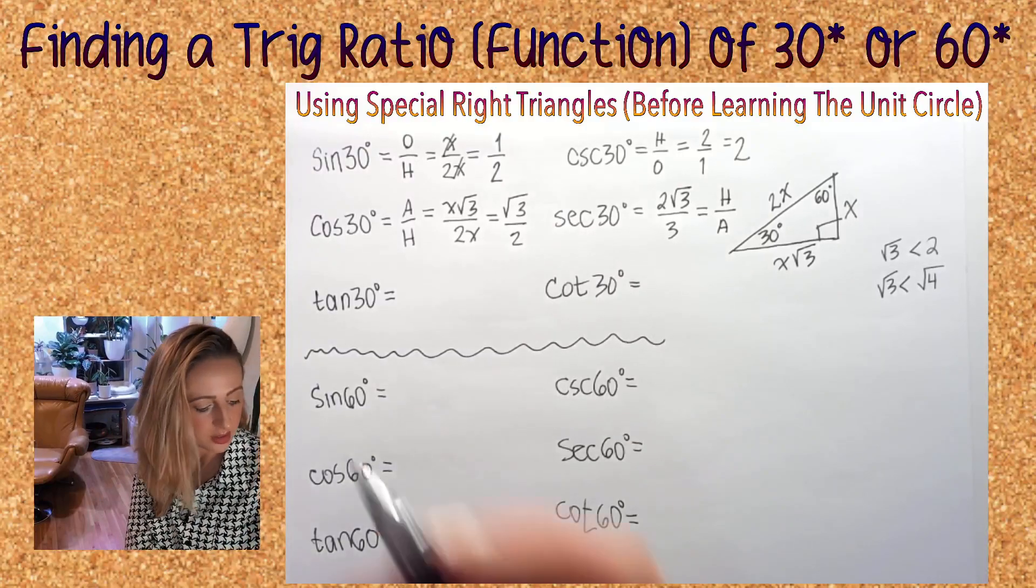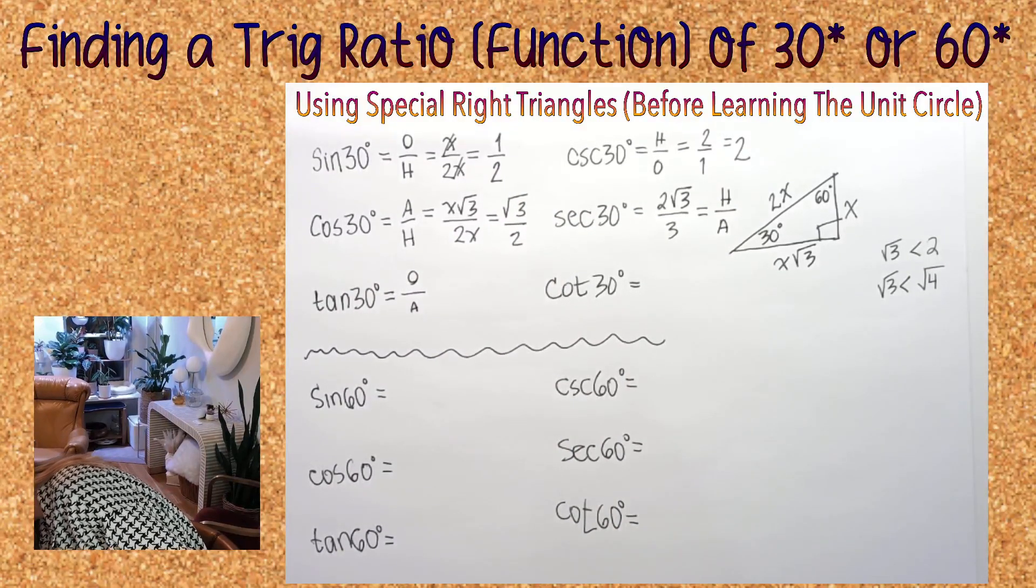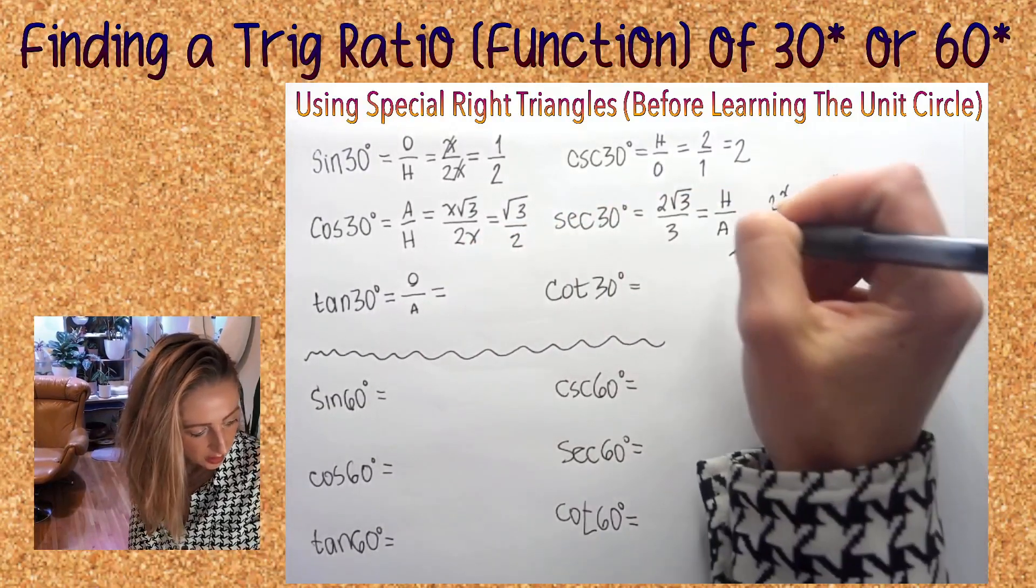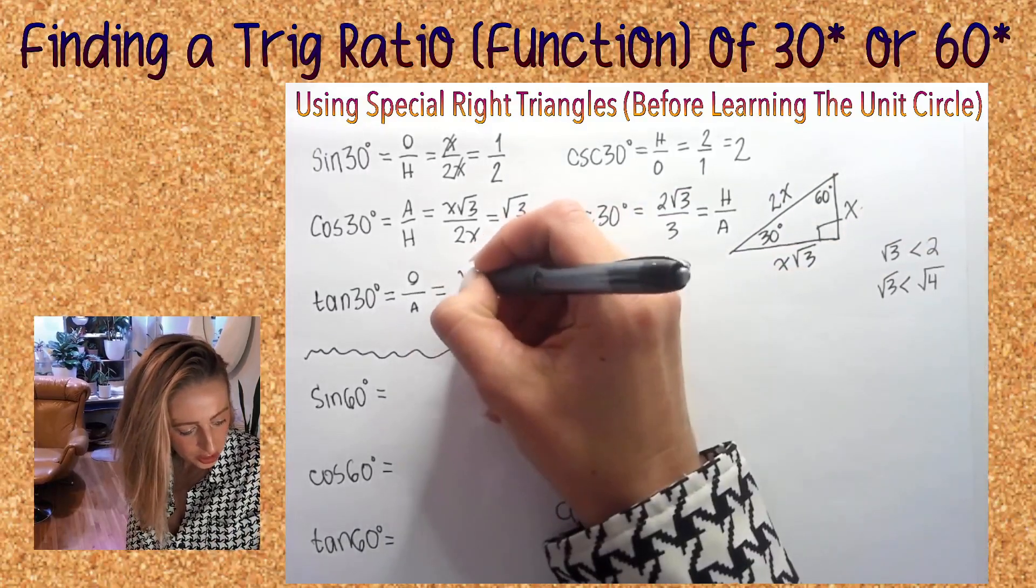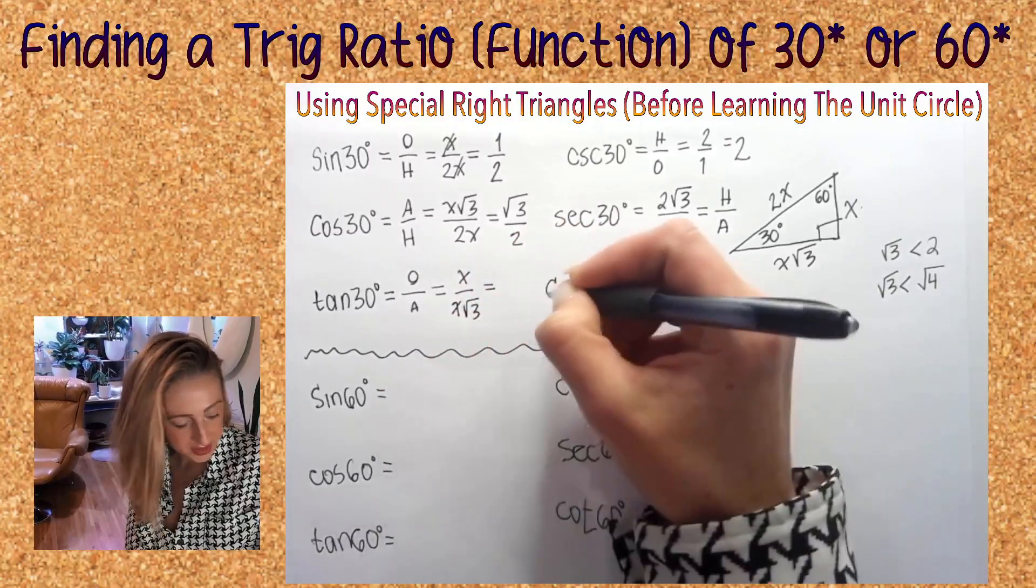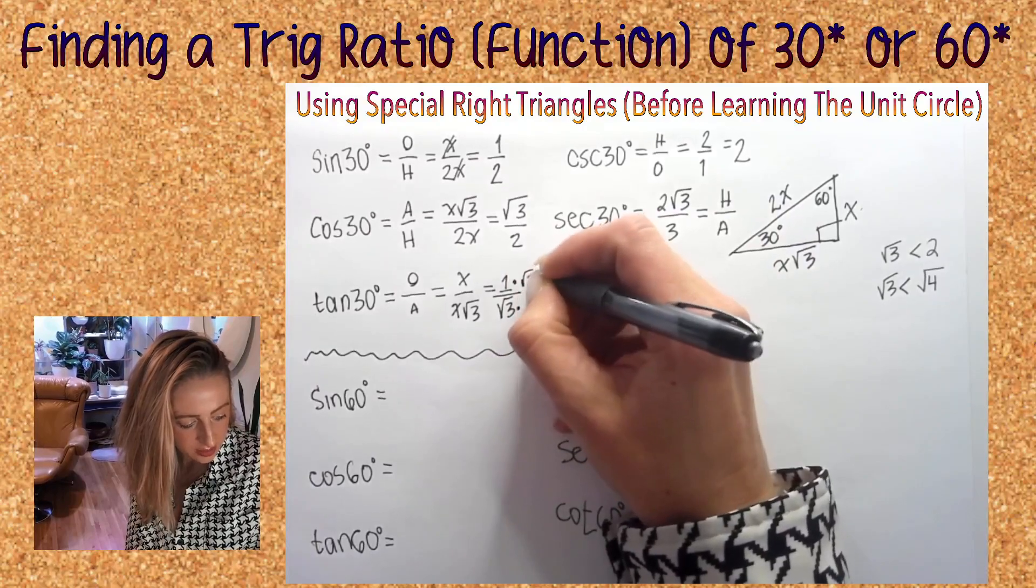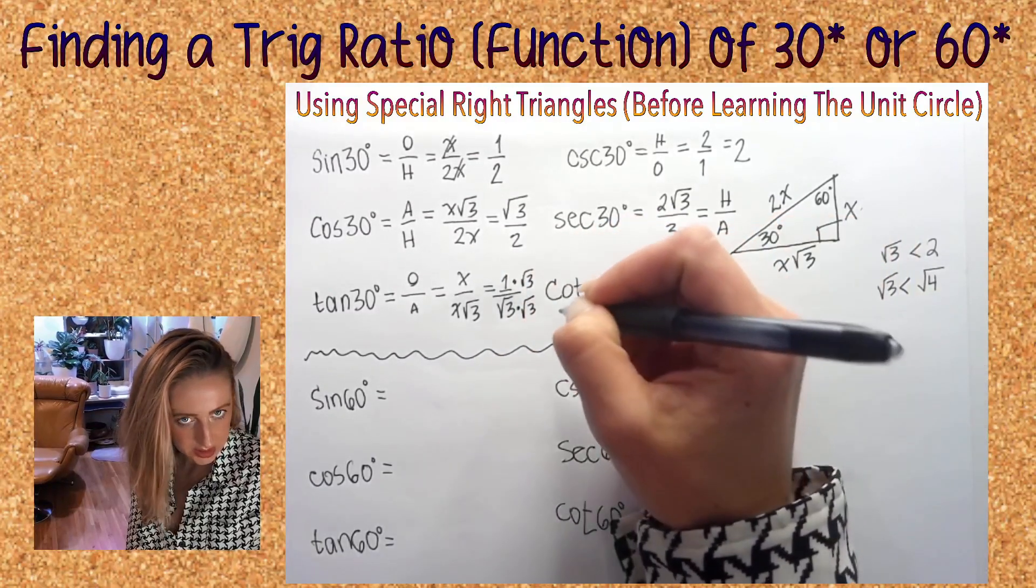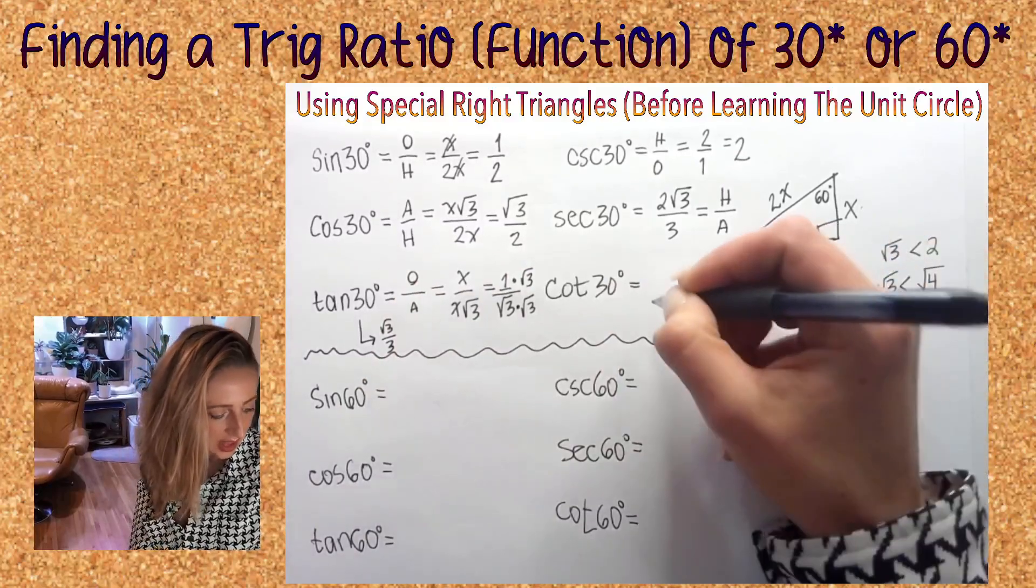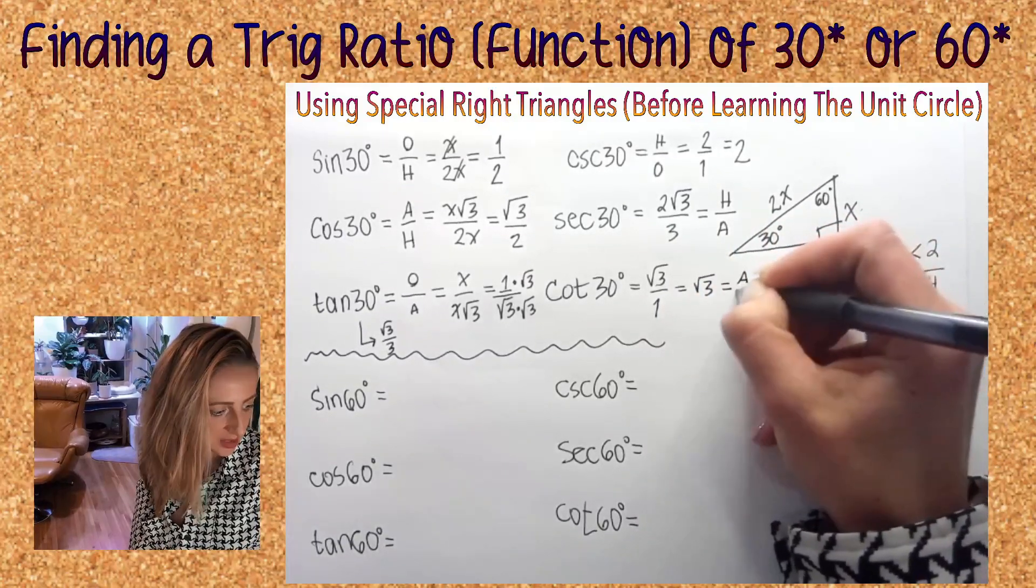Tangent: opposite over adjacent, x over x root 3. Reduce the x's, you get one over root 3. Then we have to rationalize. That will give you radical 3 over 3, and then here it's really root 3 over 1, which is root 3.